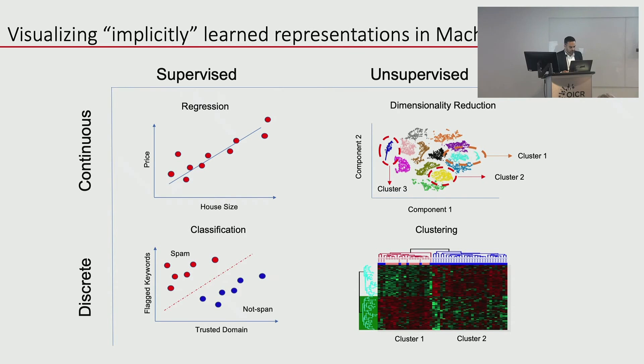Unsupervised learning is quite different — there are no labels. It's about grouping things with similar properties. For continuous data you'd use clustering, PCA, or principal component maps. Although we don't know what the clusters represent, we know that cluster three being farther from clusters one and two means there's something more similar between one and two. You can discretize this using hierarchical clustering — as we've seen with gene expression analysis — using patterns of data to group things and then finding why those clusters were grouped together.